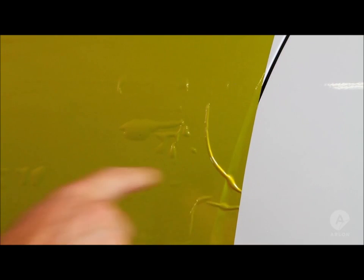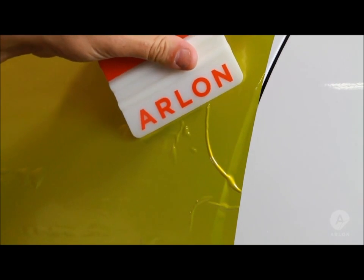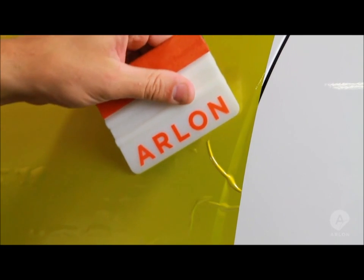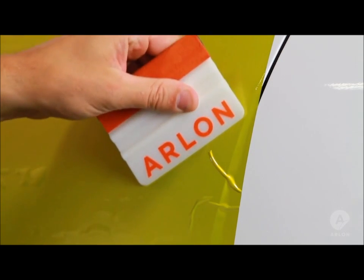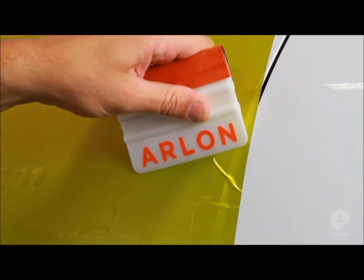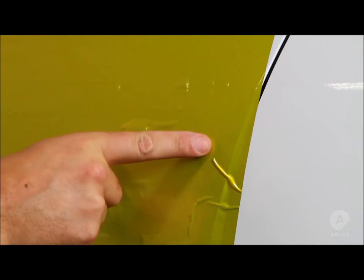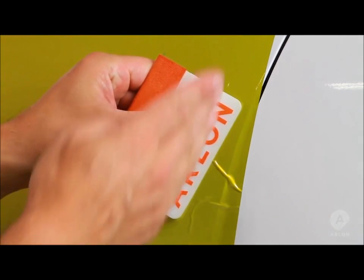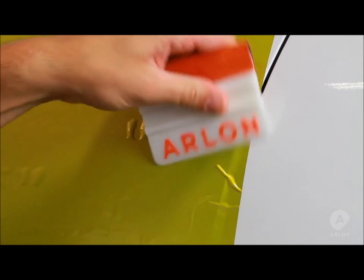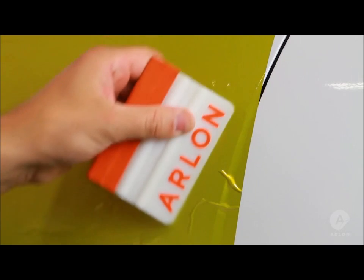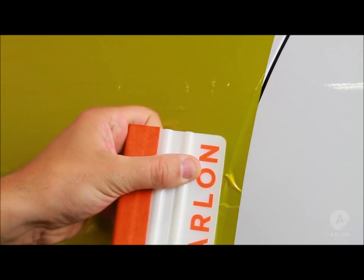If you have a potential wrinkle like this, start working it with the Teflon squeegee. Work the wrinkle back in the direction it came from. You can see that as soon as you get closer to its origin, the wrinkle develops two corners. As you continue, cut each corner off at a 45-degree angle until you work it back to the edge of the application. Seal the edge and the wrinkle is undetectable.